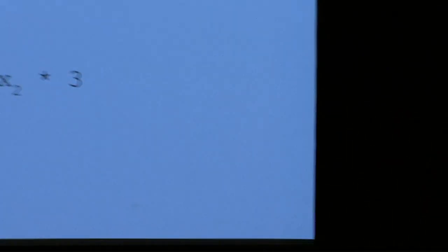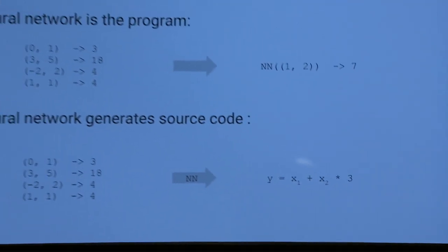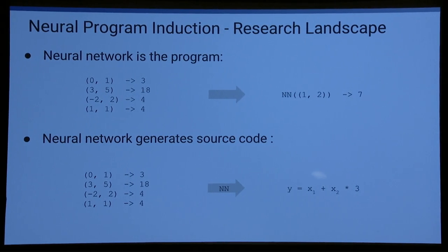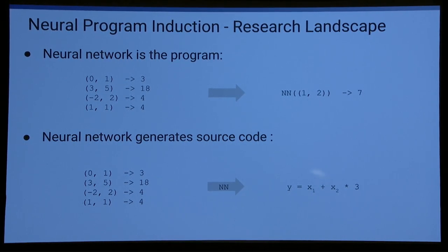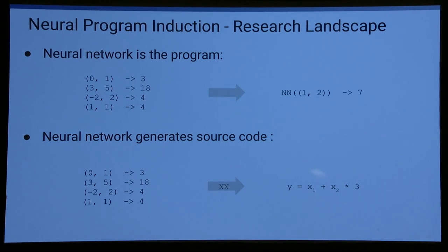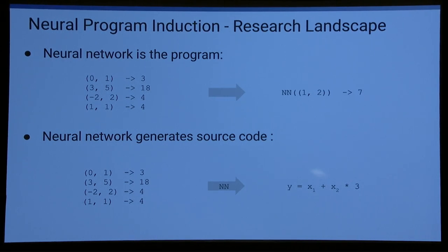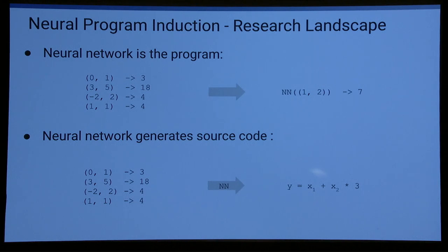The first category is: the neural network is the program. We have some sort of program specification, maybe given with input-output examples, and we try to train a neural network such that given a new input it produces the correct answer. The second kind is where a neural network generates code — program induction — and this code will generalize well beyond the first type.